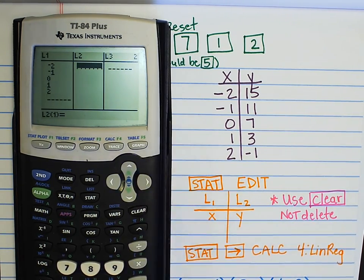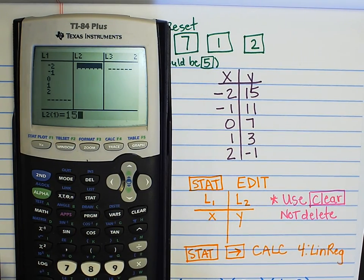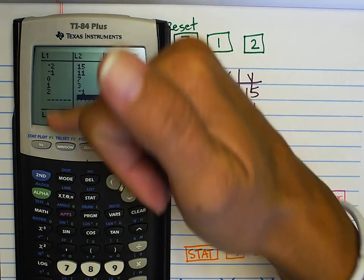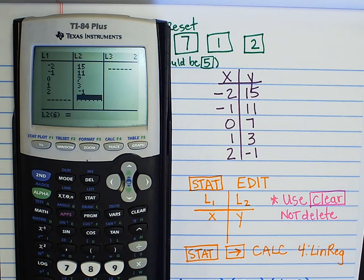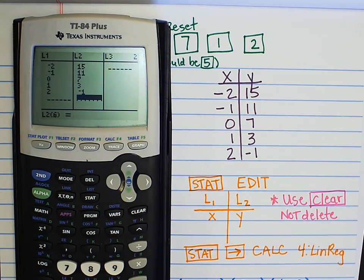I'm going to use the arrow to go over to list two and I'm going to enter the Y values. Fifteen, enter. Eleven, enter. Seven, three, and negative one. You always want to make a quick double check that you didn't leave a number out in either column. If they don't match up, obviously that's not, it's not going to do it correctly. Okay? So, I got my table typed in. I did stat, edit, typed my X values in L1, typed my Y values in L2.